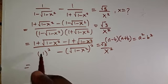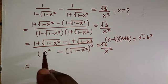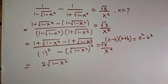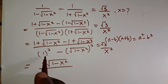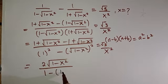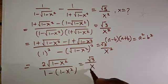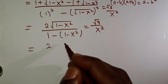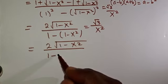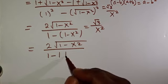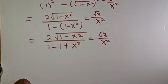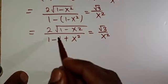From there we move on. In the numerator: 1 minus 1 gives 0, so we have 2√(1−x²). In the denominator: squaring the square root cancels it, giving (1 minus x²), and then 1 minus (minus x²) becomes 1 minus 1 plus x². So we have 2√(1−x²) over x² equals √3 over x².